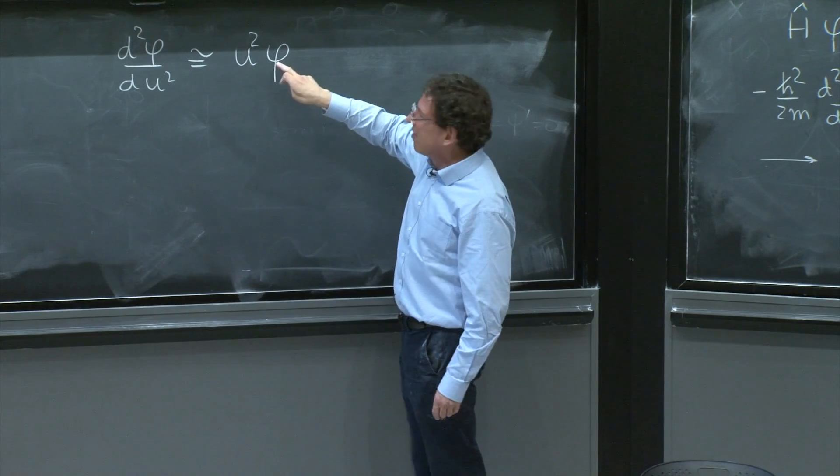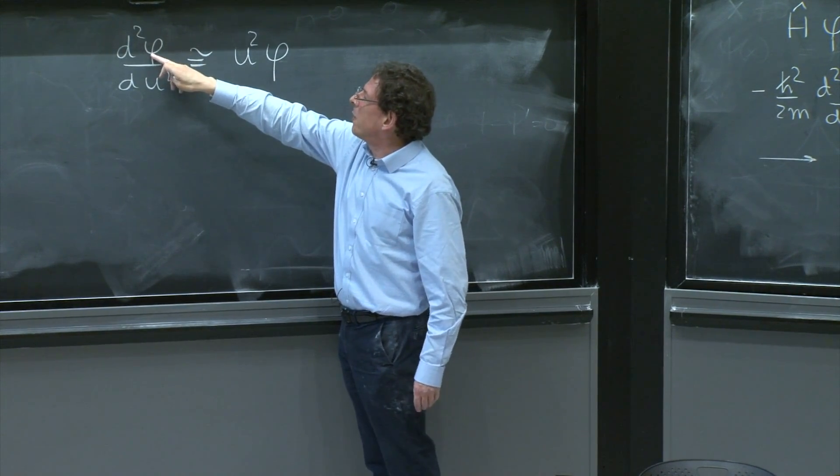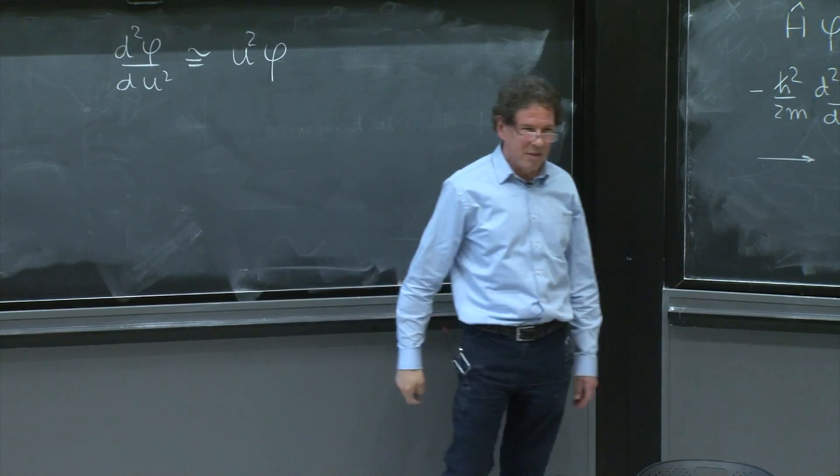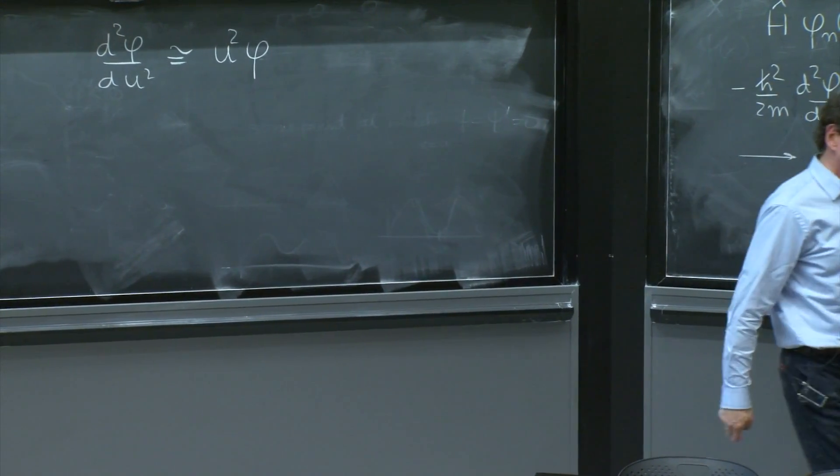But here, it goes up. You have a u to the n. The derivative is supposed to give you u to the n plus 2. But that doesn't work. So that's not a power solution.